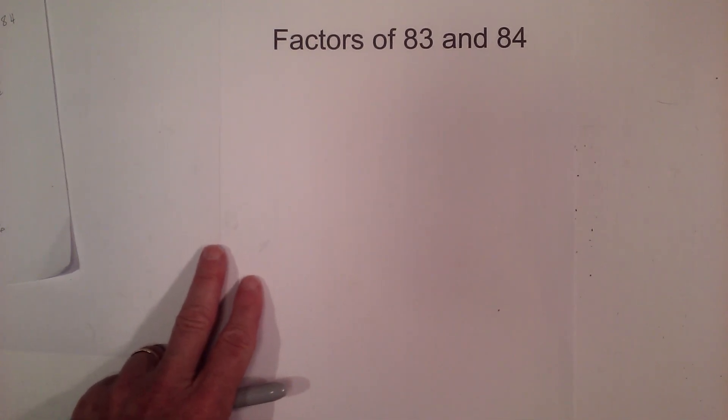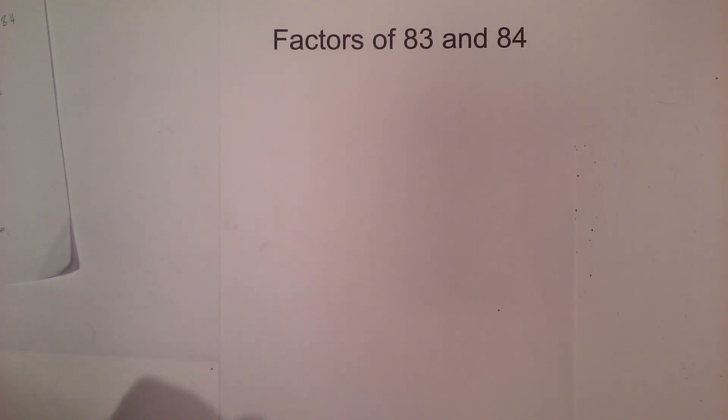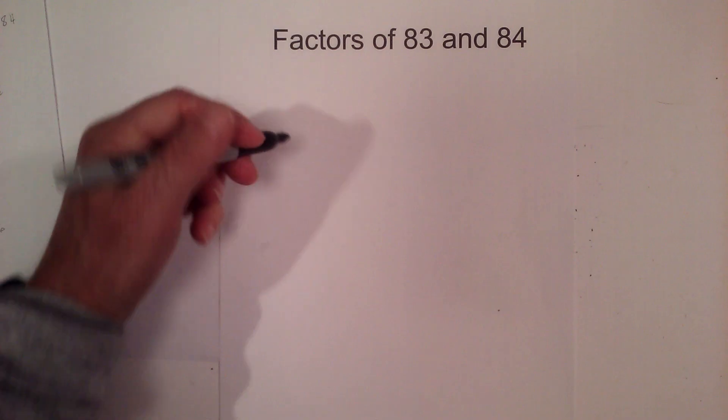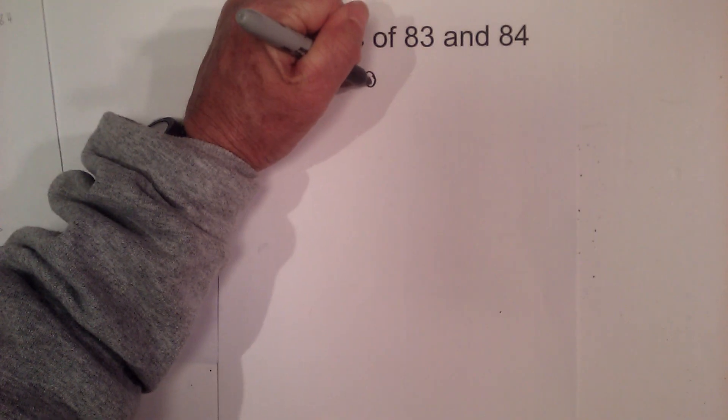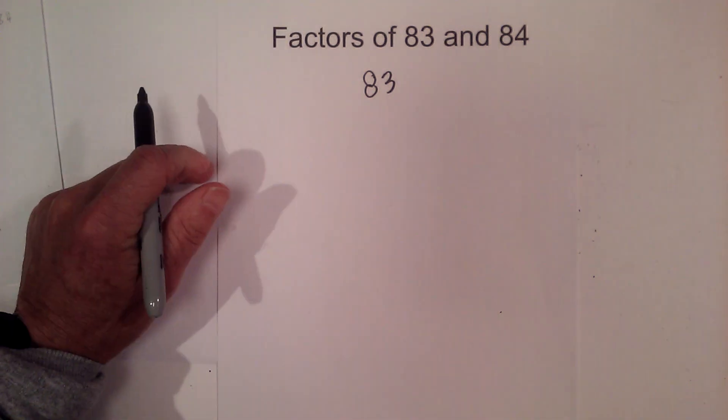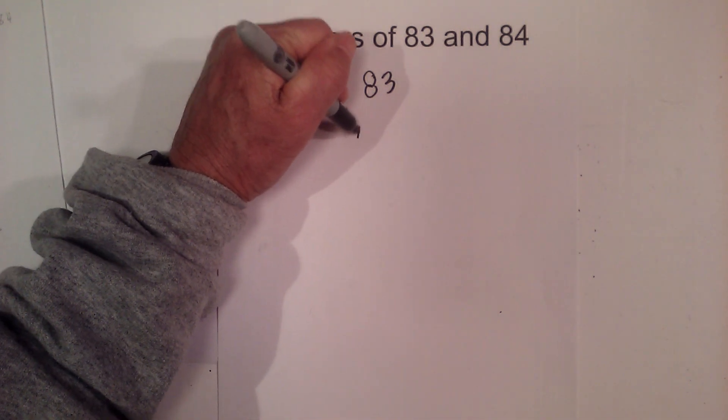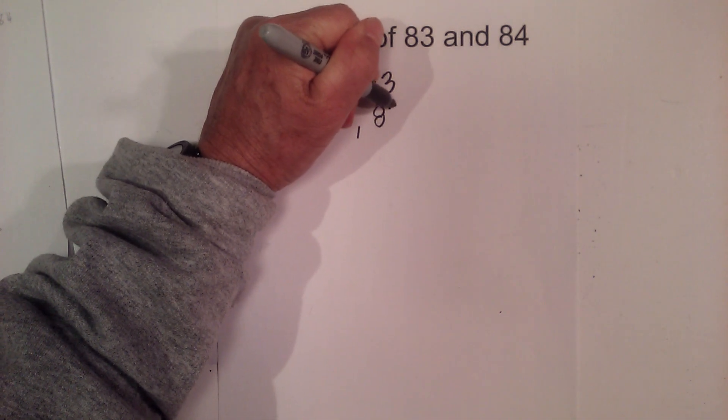In this video let's find the factors of 83 and 84. Let's begin with 83 and this will not take long because 83 is prime so the factors are 1 and 83.